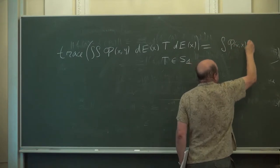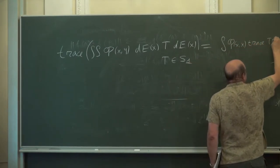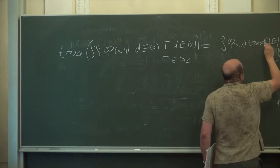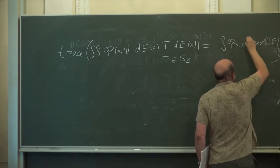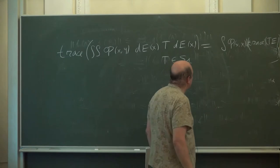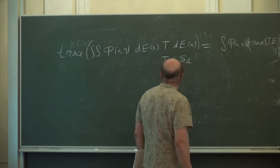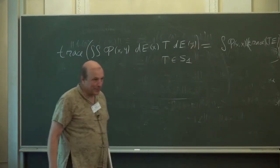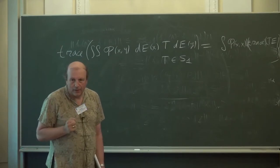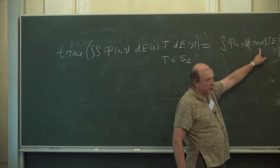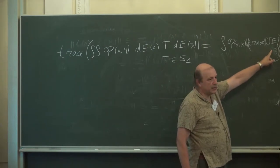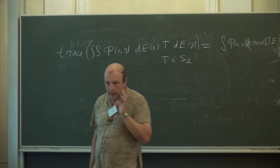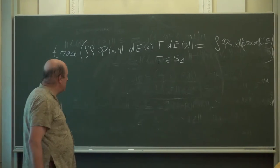The trace is just the integral over the diagonal: phi(x, x) times d(trace T · E), where E is a spectral measure and the trace of T times E is a scalar signed measure.